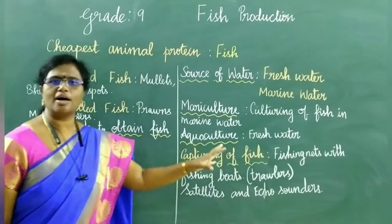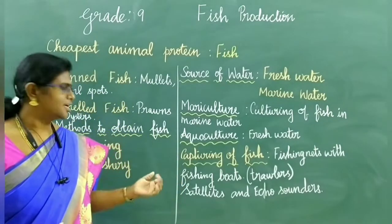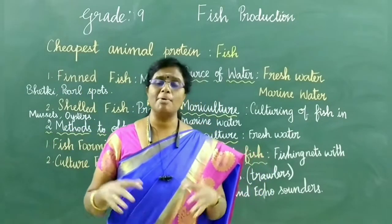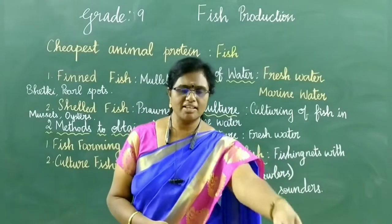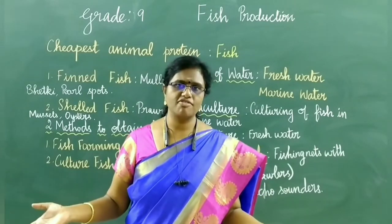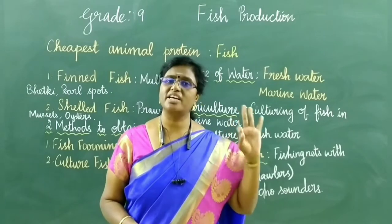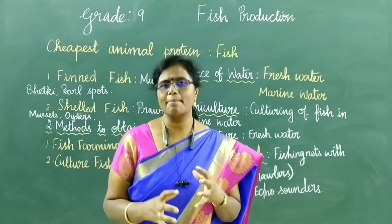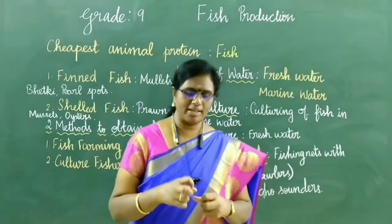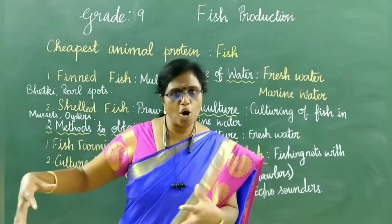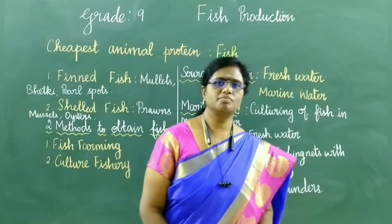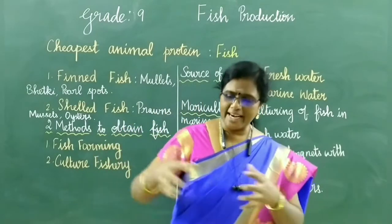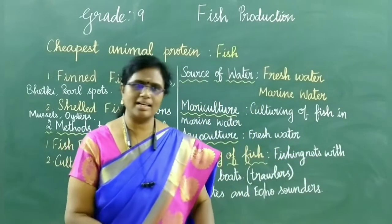We already saw the methods of capturing fish: capture fishery and culture fishery. Now, how do they capture fish commercially? With a fishing rod you can only take one fish at a time, so it is very difficult to obtain large numbers using a fishing rod. Instead, they tie a net along with a fishing boat. When the boat moves, the net also moves with the boat — that is called trawlers.